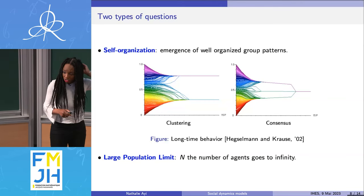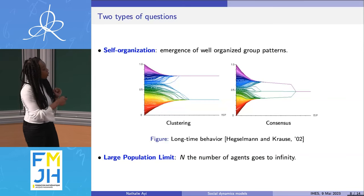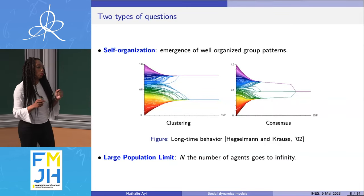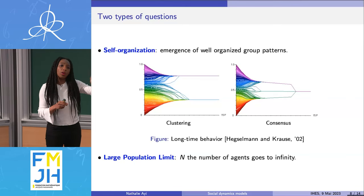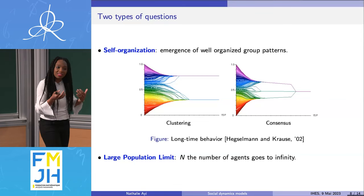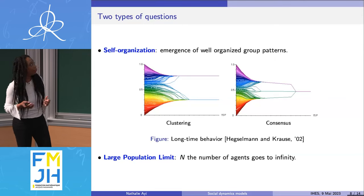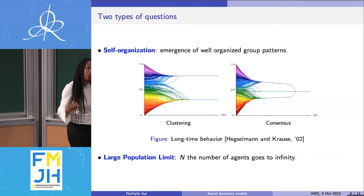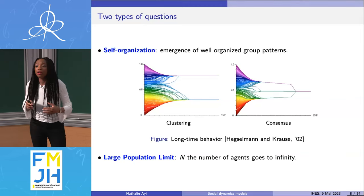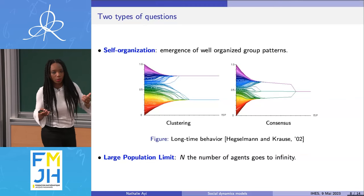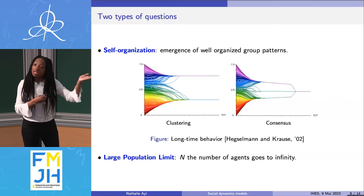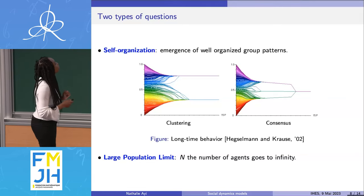The question I've been more interested in is what we call large population limits: what happens when N goes to infinity? The interest is that since I have one equation per agent, a huge number of agents means a huge number of equations — very costly to solve by computer. The idea is to trade that huge number of equations for only one equation — not on the same quantity, but a single equation, which happens to be what we call a partial differential equation. This is my specialty and my field.